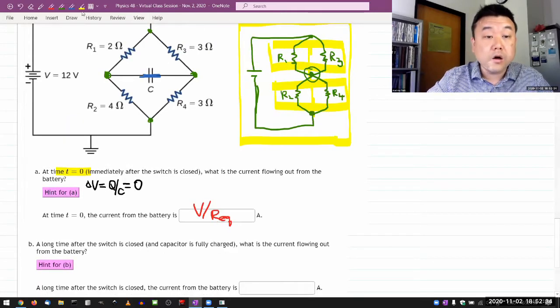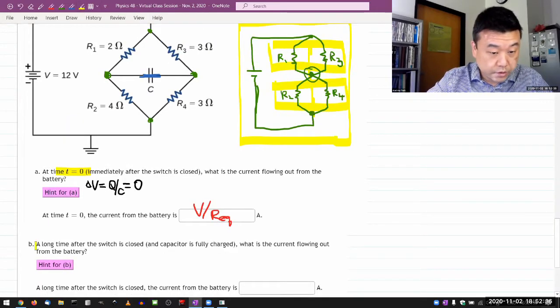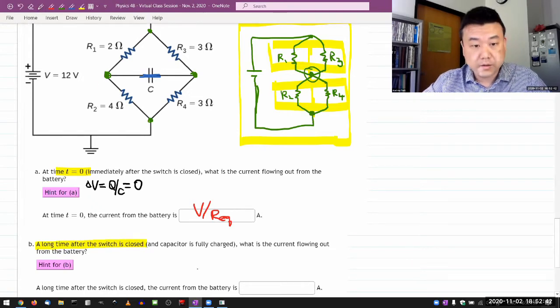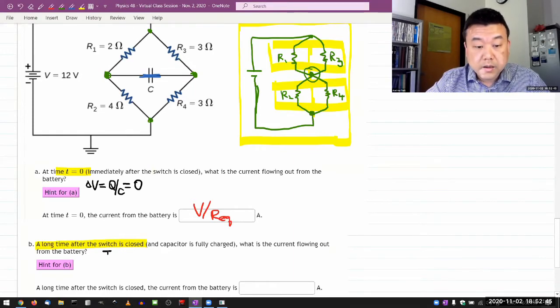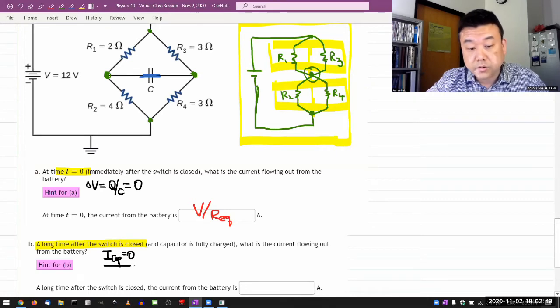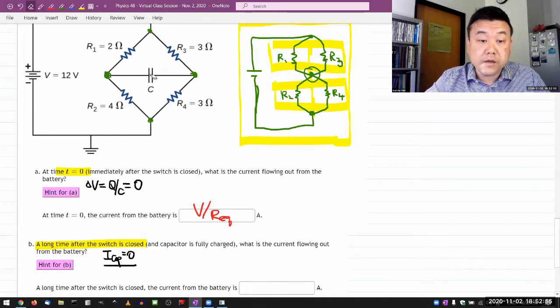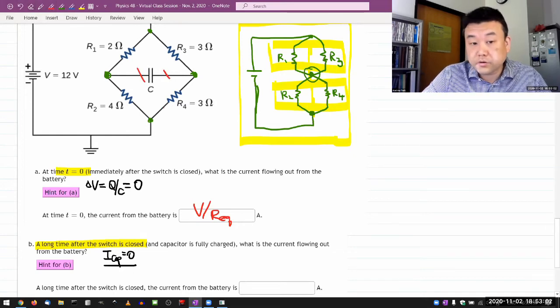So it's looking for that asymptotic behavior. And with the asymptotic behavior, the thing to remember is that the current through the capacitor is zero. So that means you are treating the capacitor like an open circuit. So rather than this being a capacitor, imagine this is a piece of wire that has been broken.